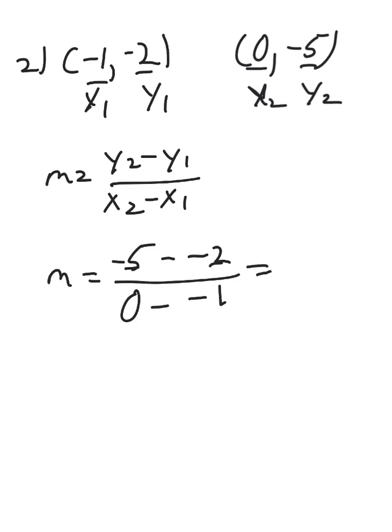So negative 5 plus 2 would give us negative 3 on the top. And then the same thing goes here on the bottom. 0 minus a negative 1 is equal to 0 plus 1. So 0 plus 1 is 1. And then our slope is negative 3 over 1. And we can simplify that to get m equals negative 3.